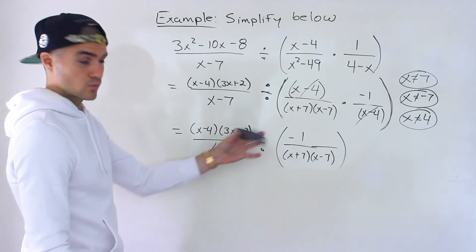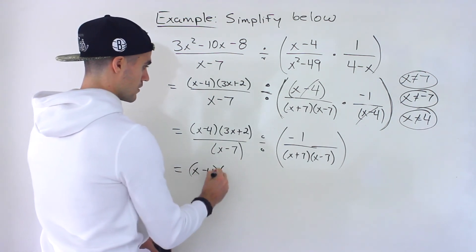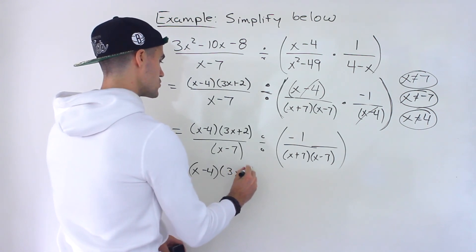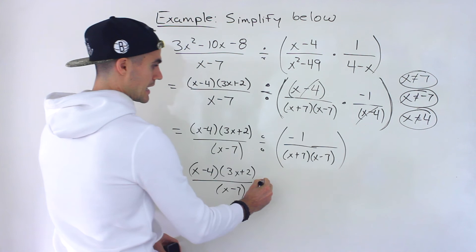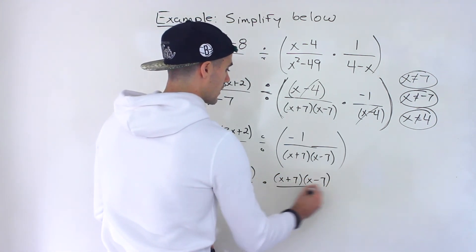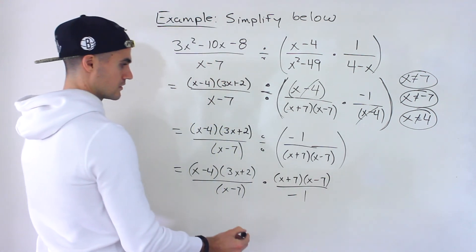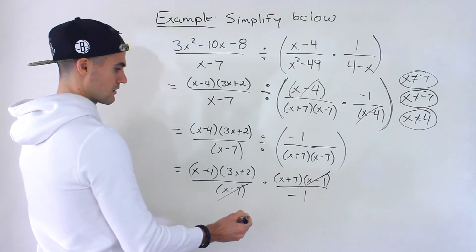Since we're dividing we flip this so we'd have x minus 4 times 3x plus 2 over x minus 7 times x plus 7 times x minus 7 that would be divided by negative 1. And then notice that the x minus 7 cancel out.